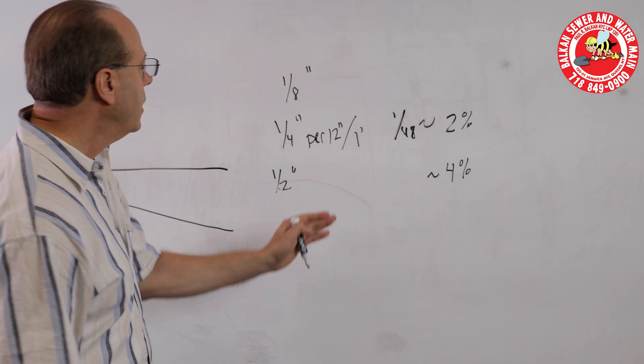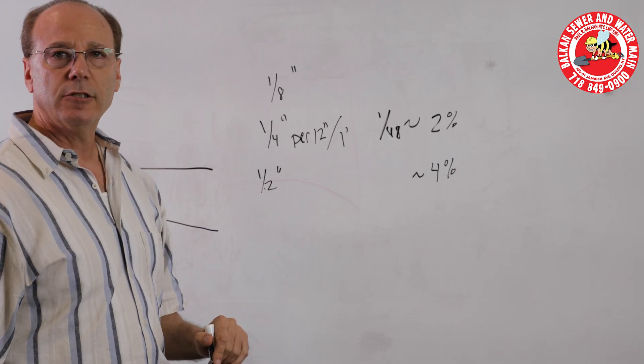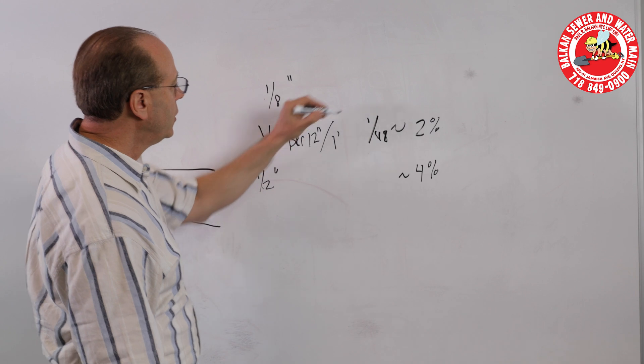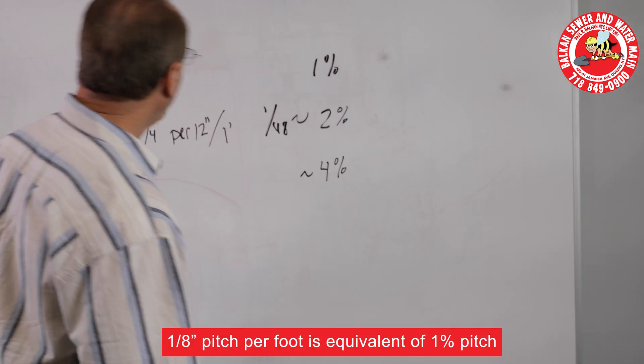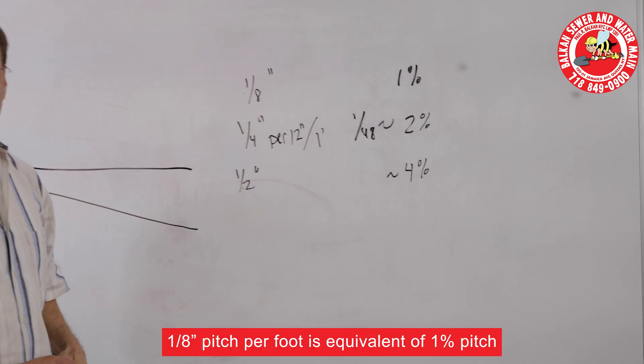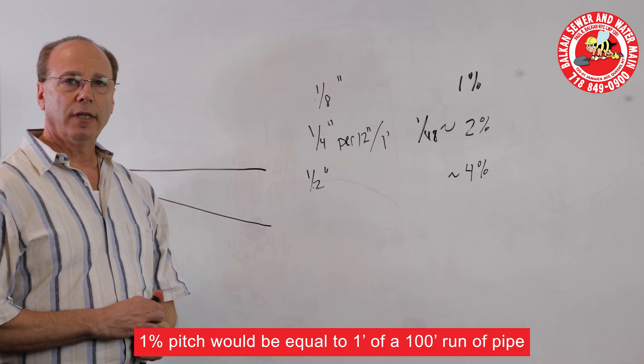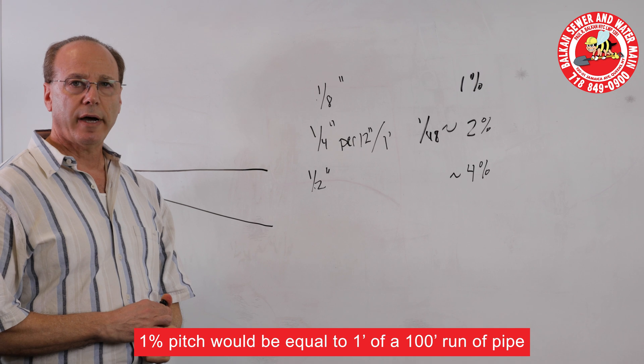And then if the plans indicated the requirement of an eighth of an inch, now you have 1% pitch. And interestingly, the larger the pipe you install, the less pitch is required.